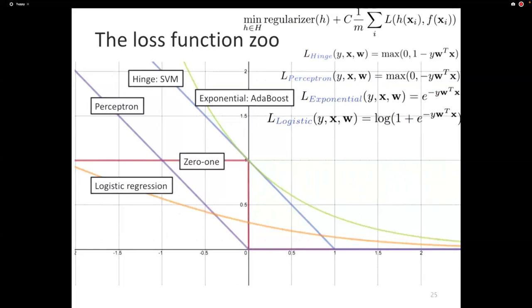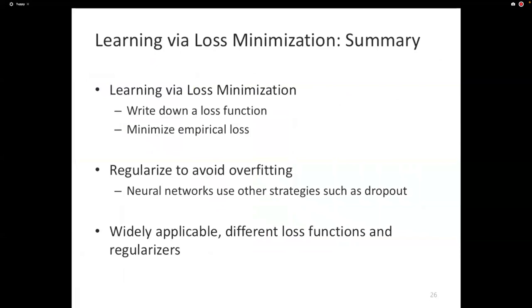We have a minute, so I want to quickly wrap this up. This is a very productive way to think about machine learning. Rather than thinking about machine learning as, I need to invent a learning algorithm, the agenda of learning via loss minimization is, write down a loss function that penalizes bad behavior on part of your classifier. And when you write down the loss function, make sure it is at least sub-differentiable, and it should be a function of the parameter.